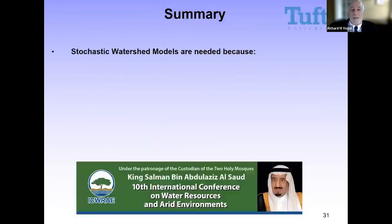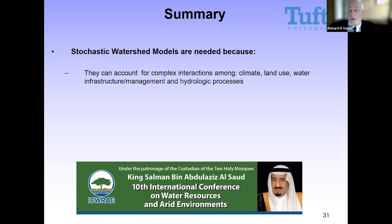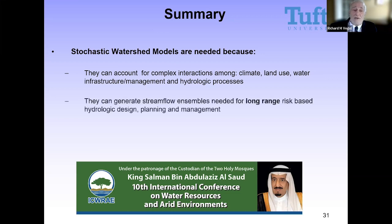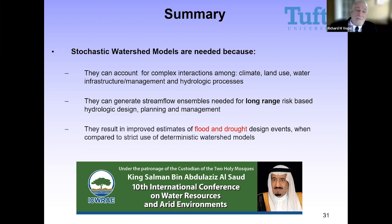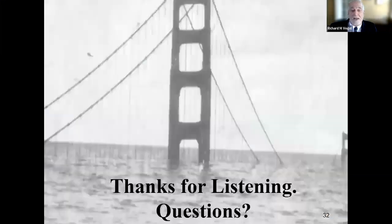In summary, stochastic watershed models are needed because they can account for all the complex interactions between climate, land use, and so forth, and because they can generate ensembles which are a prerequisite to long-range risk-based hydrologic design, planning, and management. Finally, they result in improved estimates of both flood and drought design events when compared to the strict use of deterministic models. Thanks for listening.